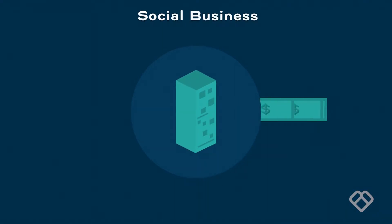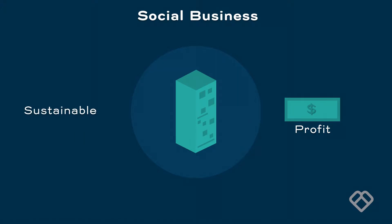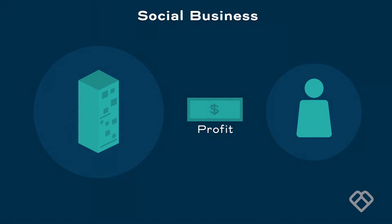The critical point is non-dividend — we don't want any personal return out of it. The company makes profit; that's what makes it a business. Profit, in a sense, makes it sustainable so that it can run by itself — it's not dependent on charity. But the profit generated is not taken out by the owner. The owner can take back the investment money, whatever he or she invested. Gradually they can recover that money, but after that they don't want any money out of it because the whole company is dedicated to solving problems.